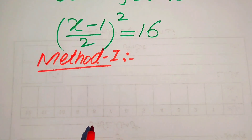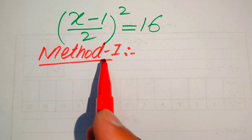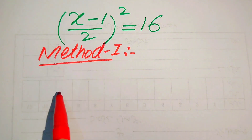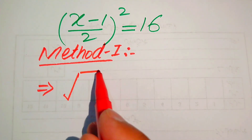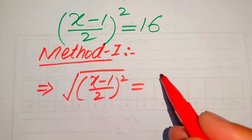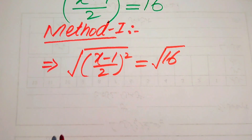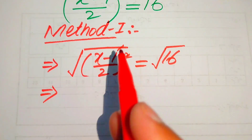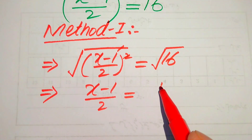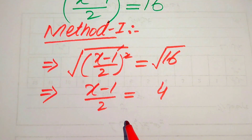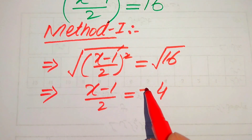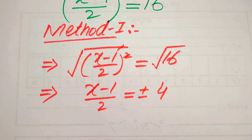Now we move towards our first method. In the first method, we take a square root on both sides. In other words, the square root of (x minus 1 over 2) whole squared equals the square root of 16. The square and square root cancel, giving us x minus 1 over 2 equals 4, and we apply a plus-minus sign on one of the sides.